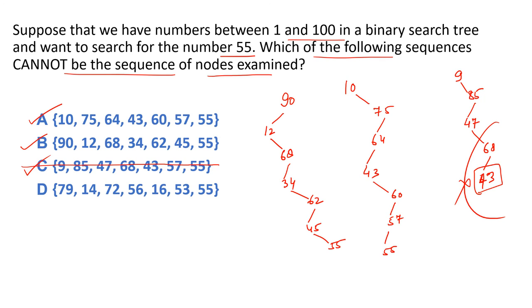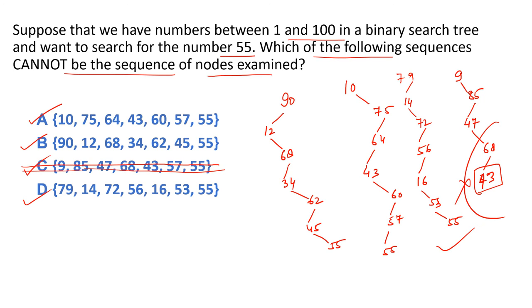D option bhi verify karte hain: 79, 14 (left), 72 (right), 56 (left), 16 (left), 53 (right), 55 (right) — koi bhi condition violate nahi ho rahi. Toh D option bhi sahih hai. Hamaara answer C hai, jo valid sequence nahi bata raha examination ka.